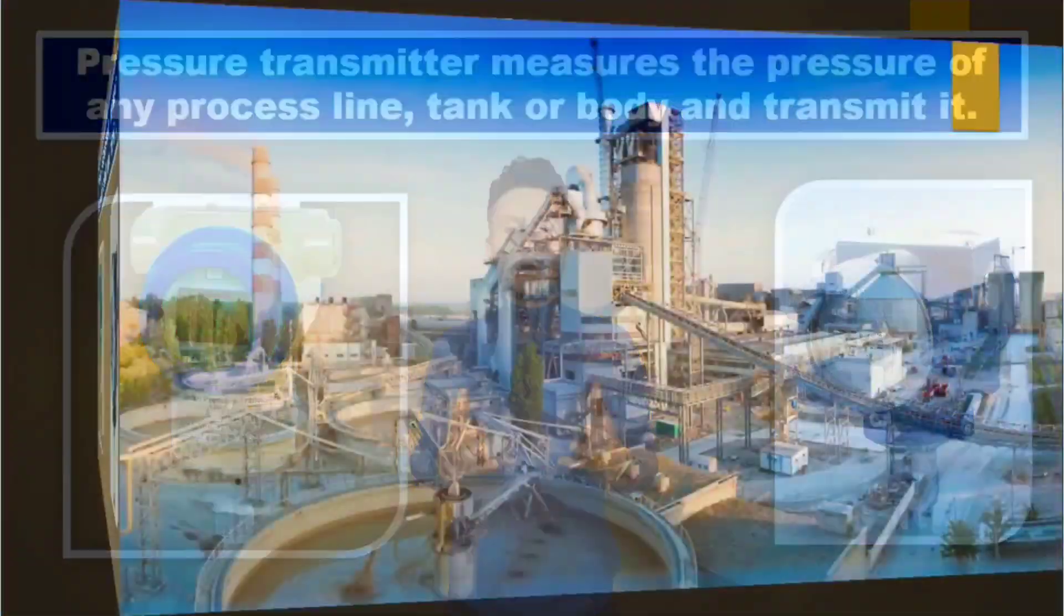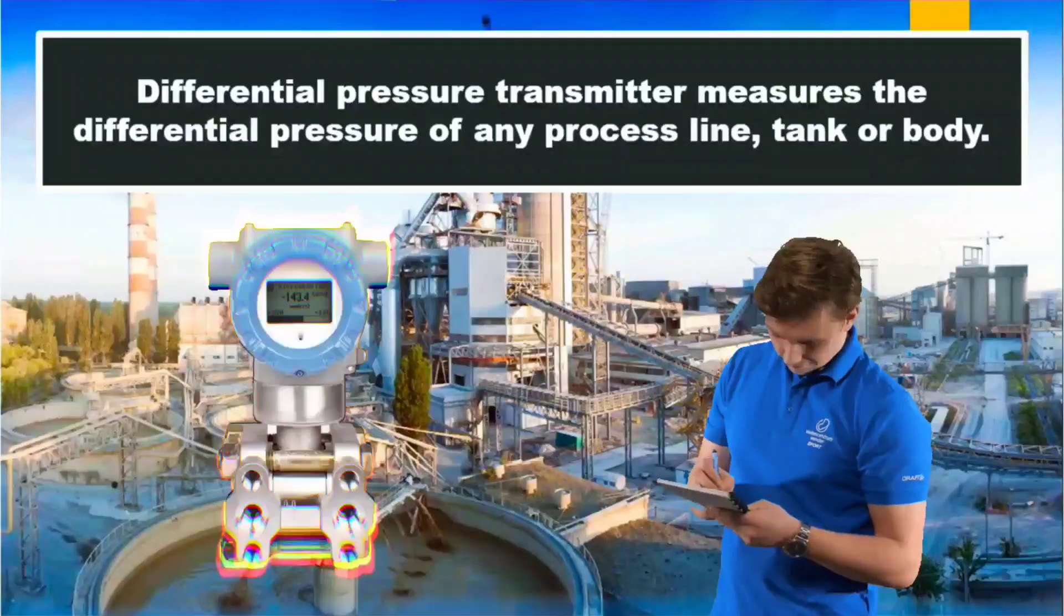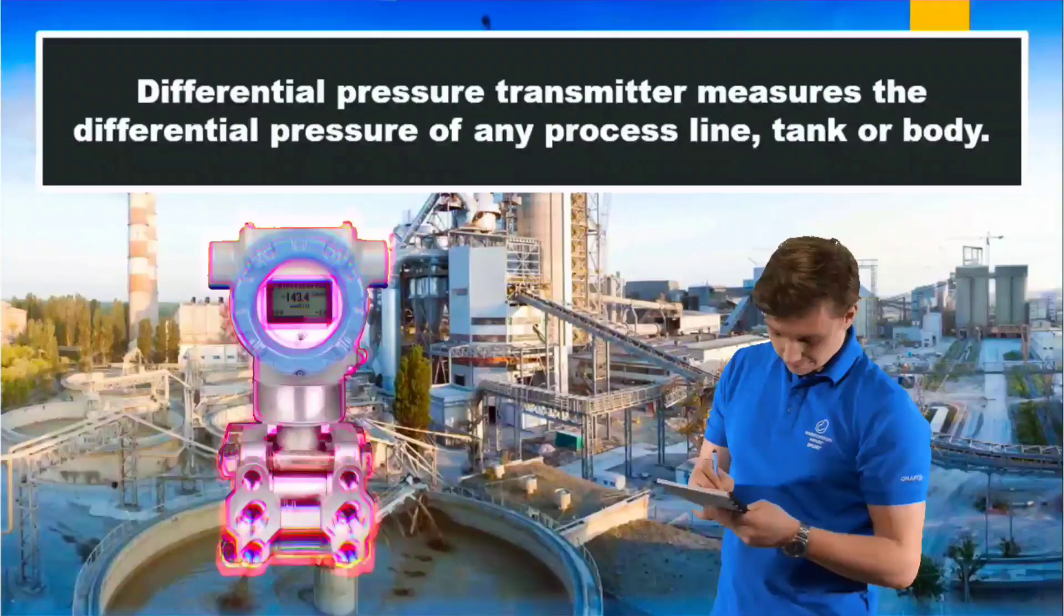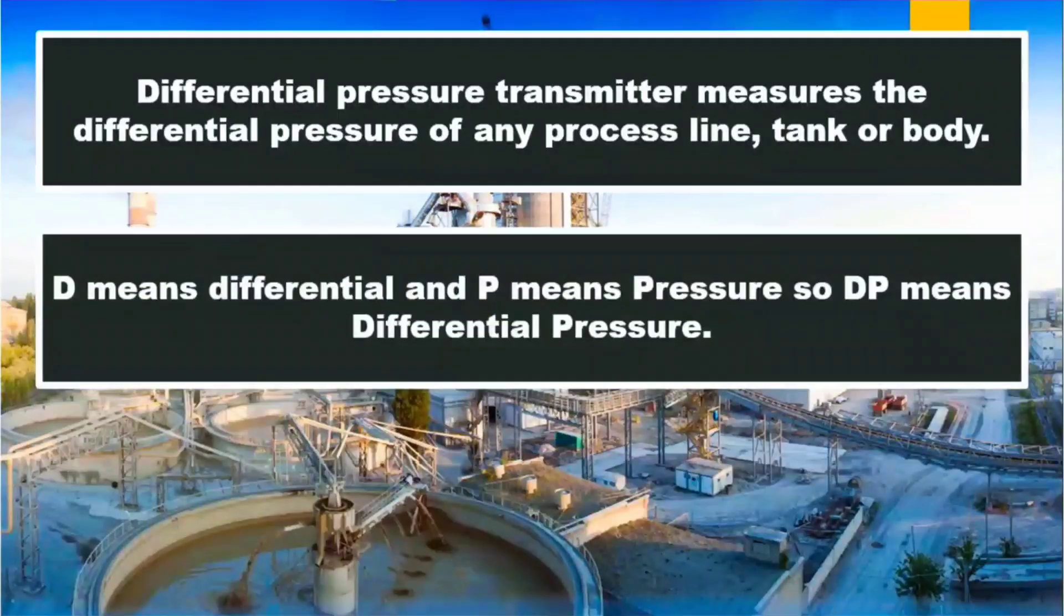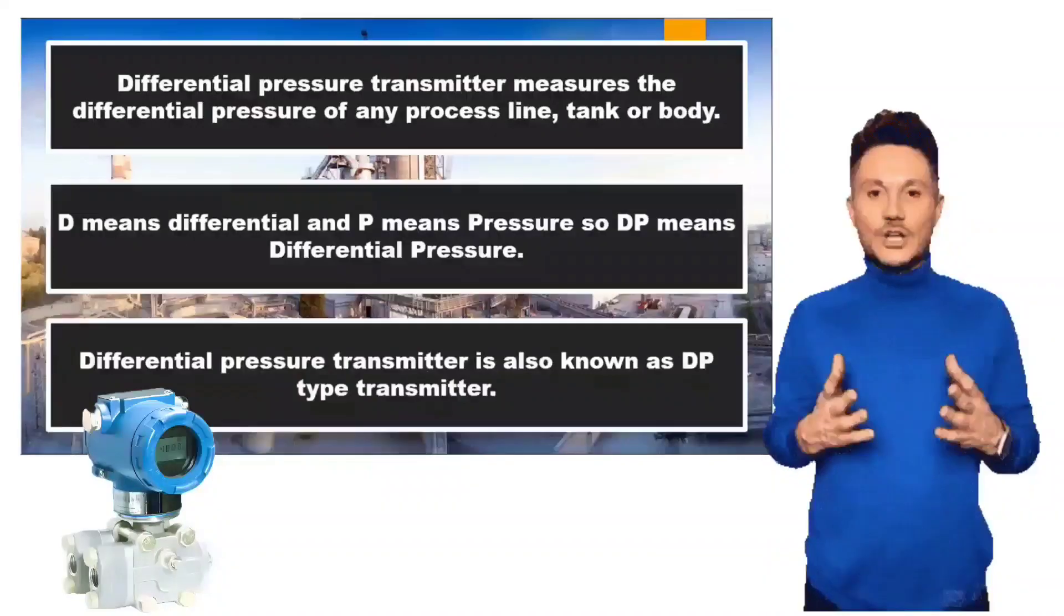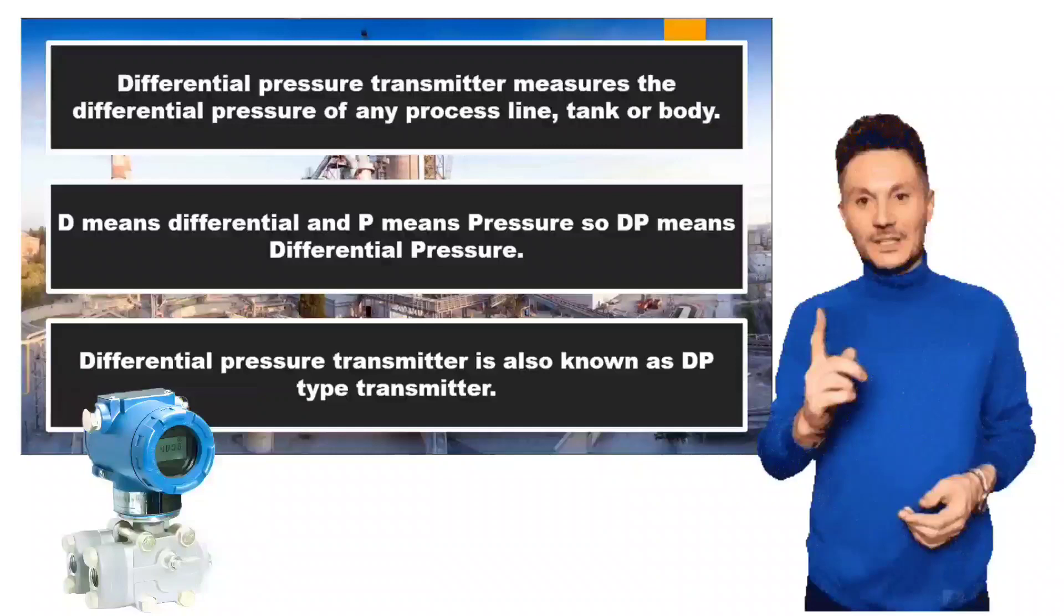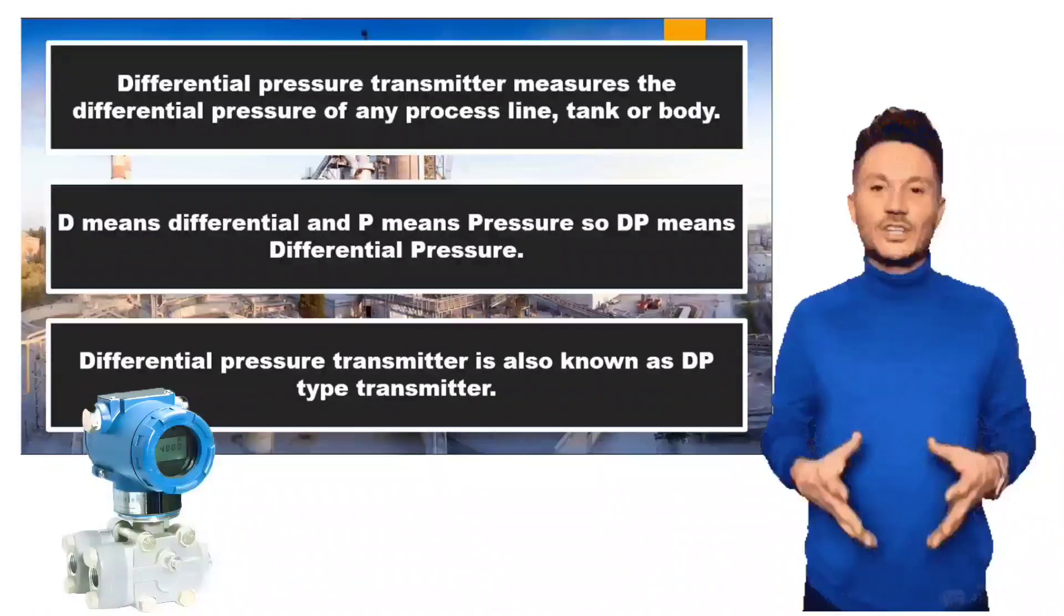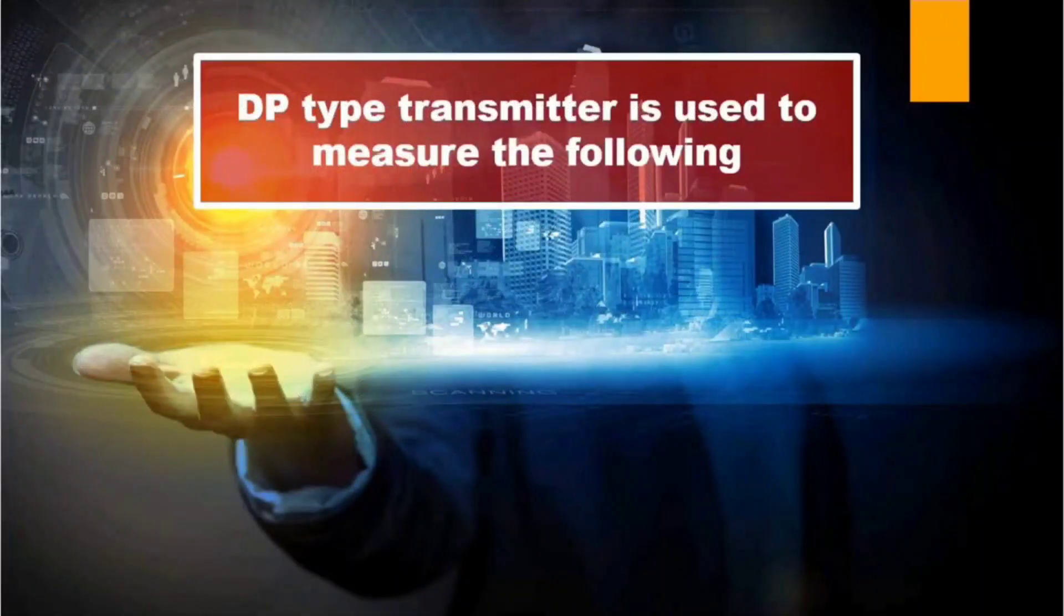Differential Pressure Transmitters measure and transmit differential pressure in industries. Look friends, D means differential and P means pressure. So this will be the differential pressure. That's why differential pressure transmitters are also called DP-type transmitters. Friends, DP-type transmitters are very important in instrumentation.